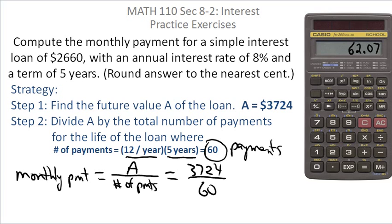And that gives you the future value, which we then divide by the number of payments. If you borrow $2,660 at an annual interest rate of 8% for 5 years with a simple interest loan, you will have to make a monthly payment every month for those 5 years.